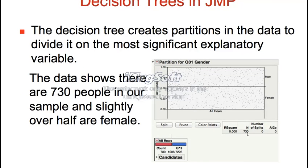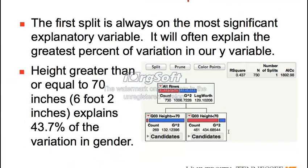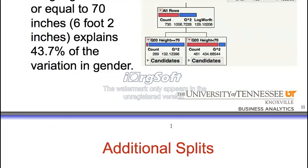There are 730 people in the data set, and we haven't split it at all yet. On the first split, which is usually the most important, we see height greater than or equal to 70 inches. This is how many males there were — this blue right here. There were 269 total that were 70 inches or greater, and a lot of them were males. We can actually do a leaf report.